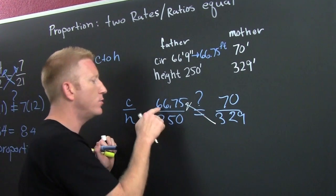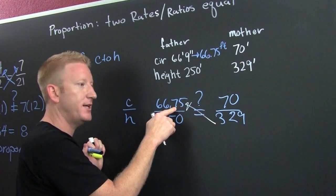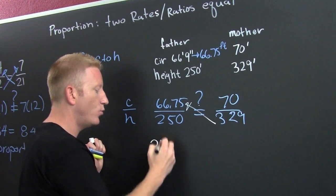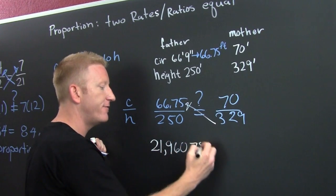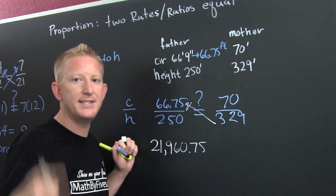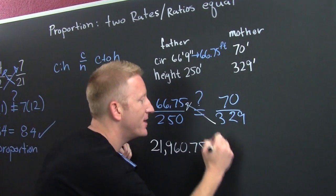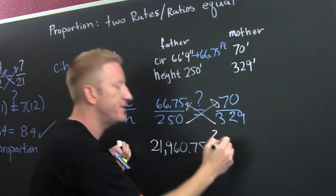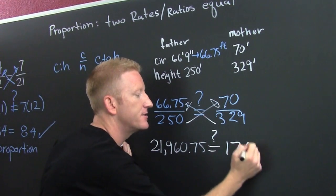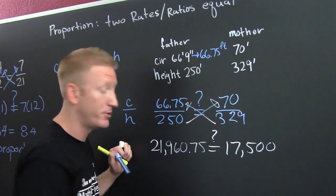That's 66.75 times 329. That's 21,960.75. Did it in my head. No, it's written on the wall. We want to know whether or not that's going to be 250 times 70, which is 17,500. Are those in proportion? They're not in proportion.